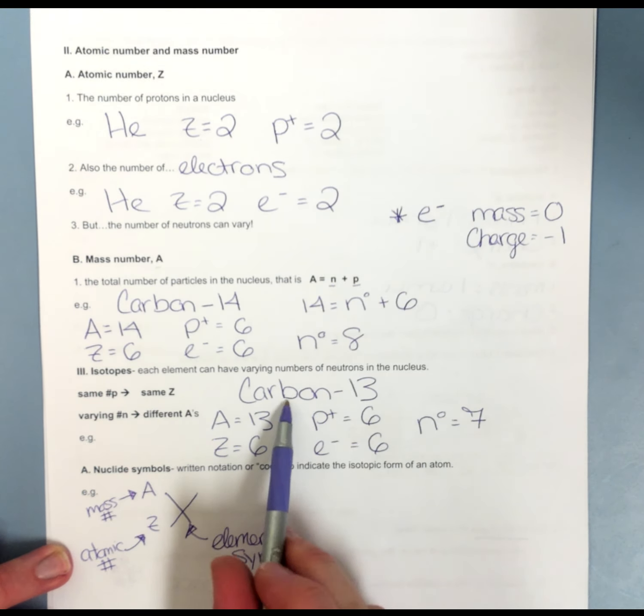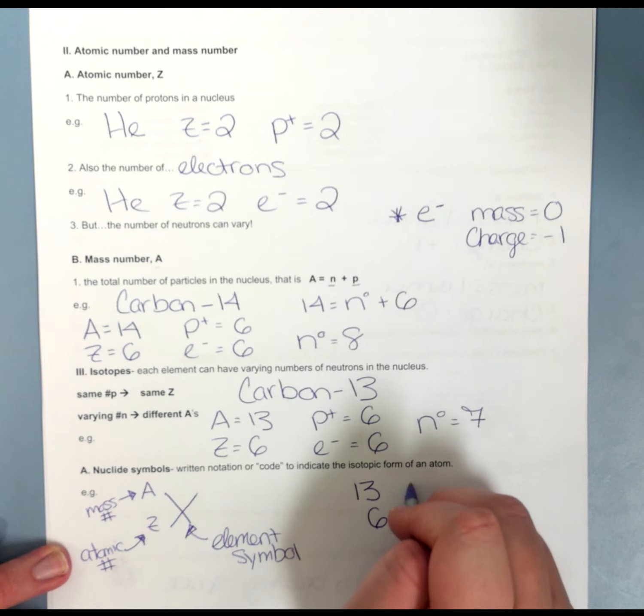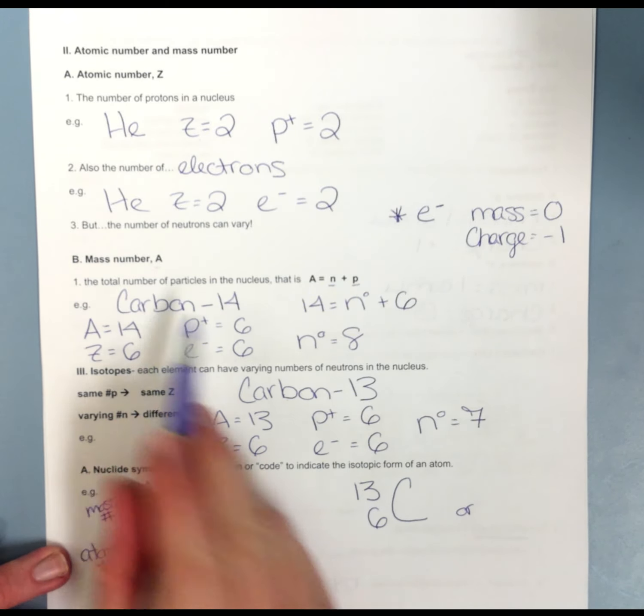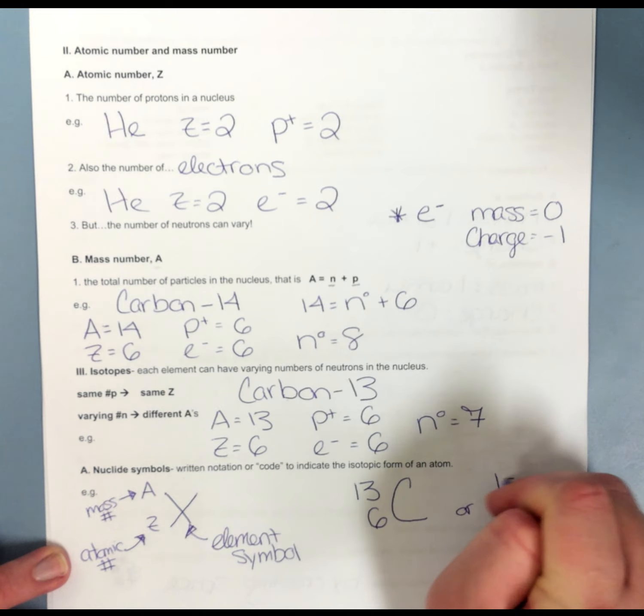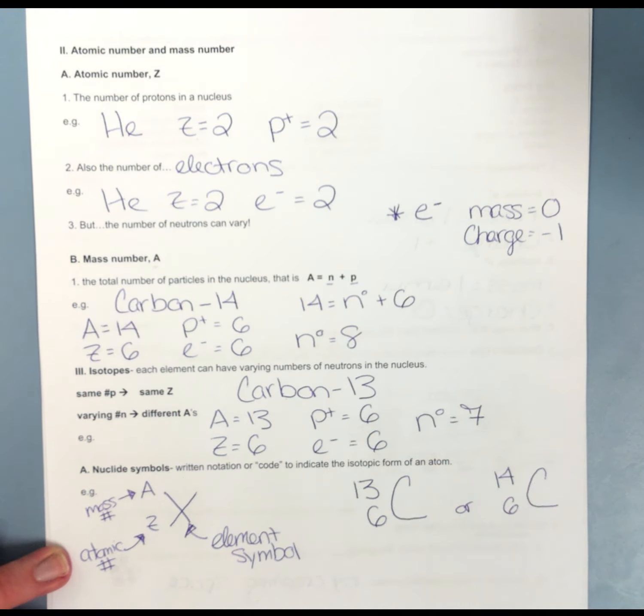If I were to write carbon-13, I would put the 13 on top, 6 goes on the bottom, and then I write my C. That's my element symbol for carbon. I could also have a carbon-14, where I have carbon dash 14. That can be written as 14 on top, 6 on the bottom, and C for carbon.